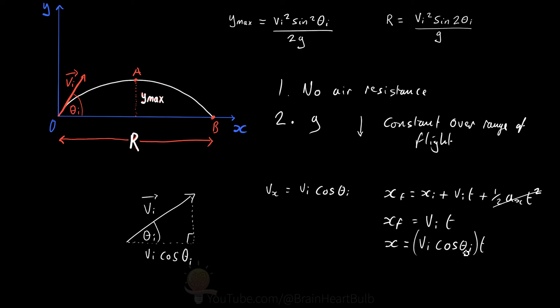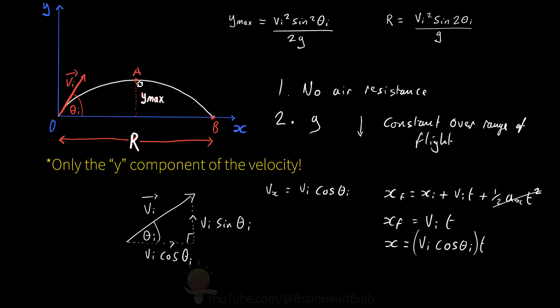Now we can focus on the y component of the projectile's velocity. Using trigonometry again, the y component of the velocity is vi sine theta. The y component velocity starts off at vi sine theta, but as the projectile reaches its maximum height, the velocity falls to zero because it's not climbing any higher.